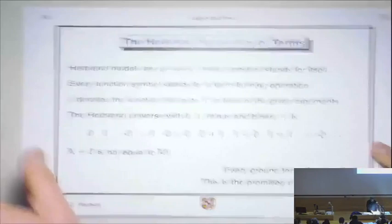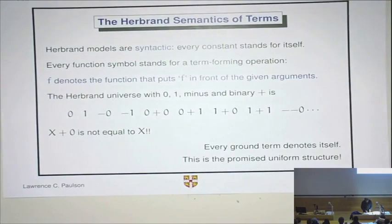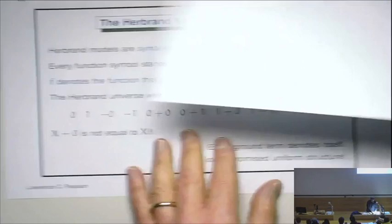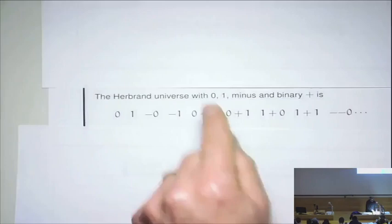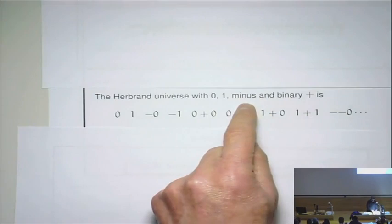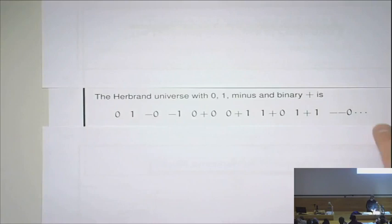Now, again, maybe I should use other visualizer, but I'll do it this way. And I'm going to hide some stuff for a moment. So, if we have got just the constants zero and one, if we've got a unary minus and a binary plus, then the Herbrand universe will look like that. And, yeah, it looks crazy, right? You've got zero, minus zero, zero, plus zero, minus, minus zero. And they're all different.